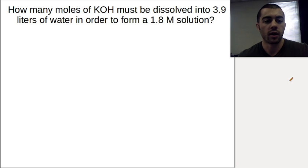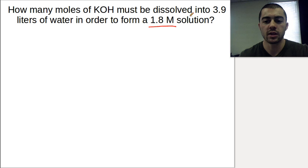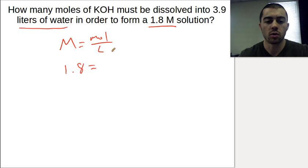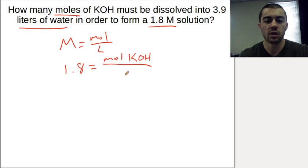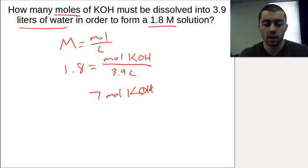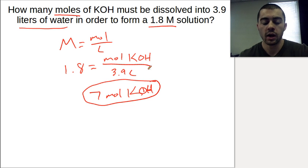Next example: How many moles of KOH must be dissolved into 3.9 liters of water to form a 1.8 molar solution? We have the molarity and the liters, so we plug into the formula: 1.8 equals moles over 3.9 liters. To solve for moles, we multiply 3.9 by 1.8, which gives us 7 moles of KOH needed to make a solution of this concentration.